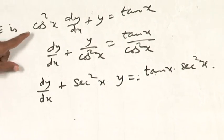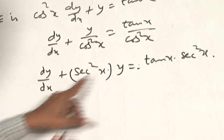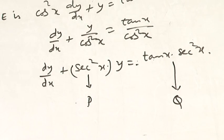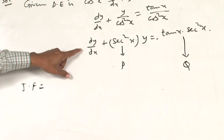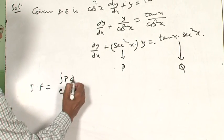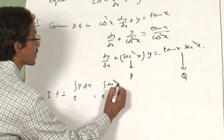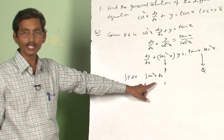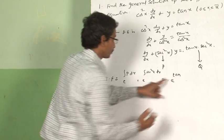The given first order linear differential equation is of the form dy by dx plus P times y equals Q. So I identify P equals secant squared x and Q equals tan x times secant squared x. The integrating factor of this equation is e power integral P dx, which equals e power integral secant squared x dx. Since the integration of secant squared x is tan x, this gives integrating factor equals e power tan x.